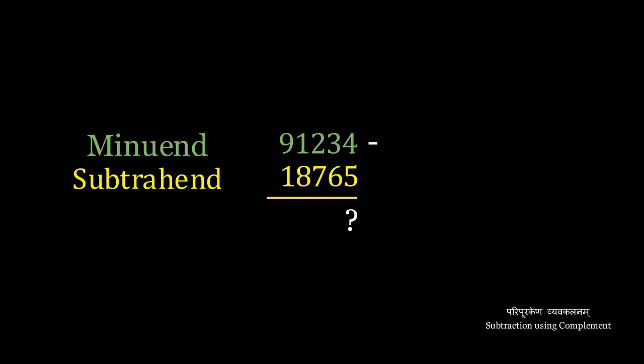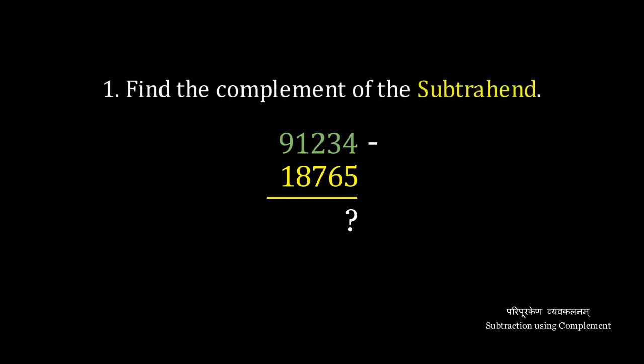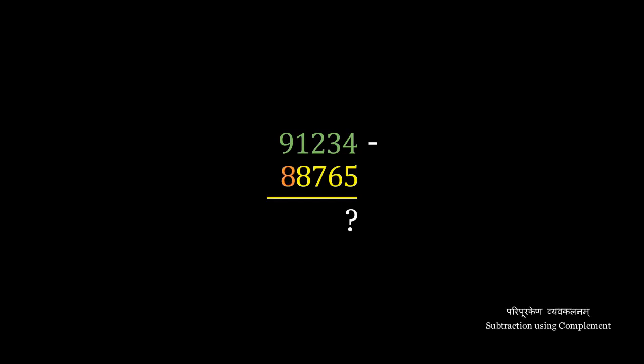Since our method for complements is independent of the number of digits, and each digit can be handled independently, this is easy enough. Replace the subtrahend with its complement, add it to the first number, that is the minuend.